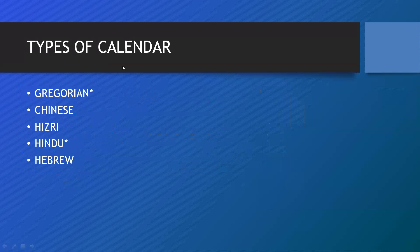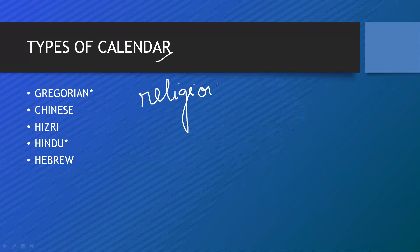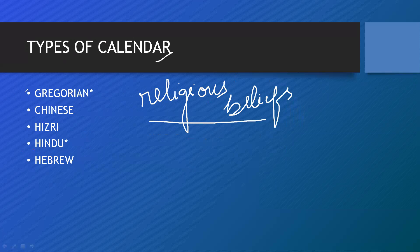Now, my dear children, according to many religious beliefs there are different kinds of calendars. There are different kinds of calendars based upon religious beliefs and also some factual concepts. Some examples are: the Gregorian calendar, the Chinese calendar, the Hijri calendar, the Hindu calendar, and the Hebrew calendar.